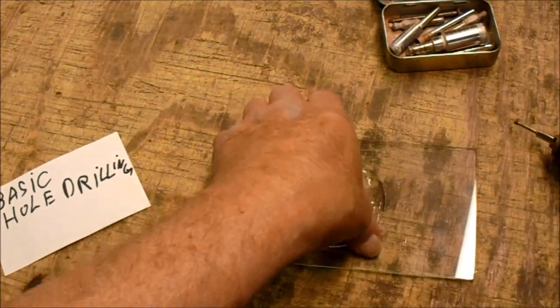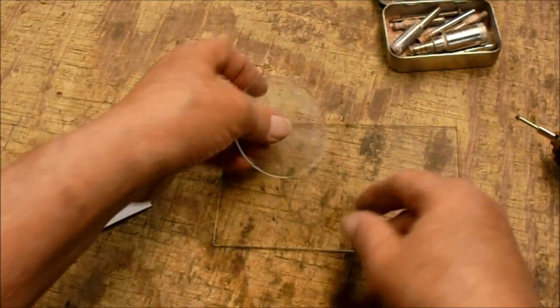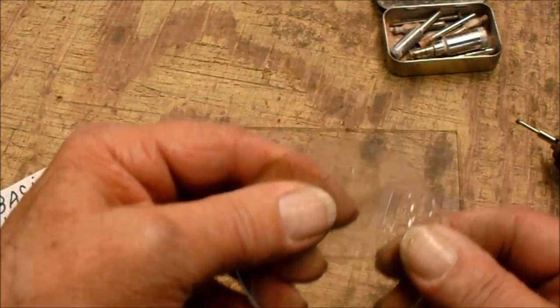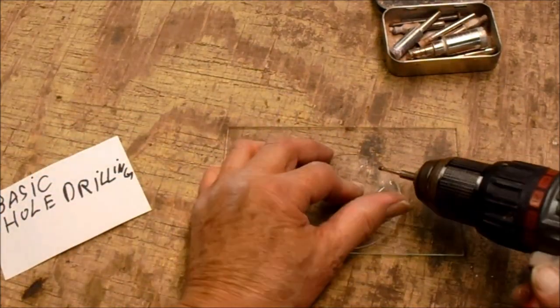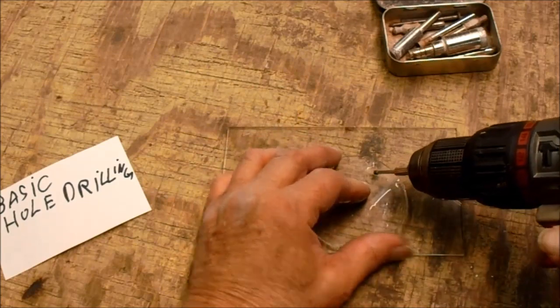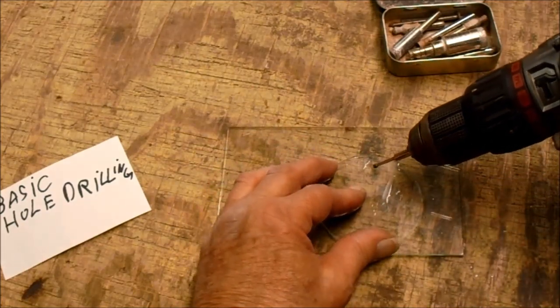See, now it's skittered. See that little mark there? Can you see that little tiny mark? I'm on clear glass so it is hard to see. So start at an angle.